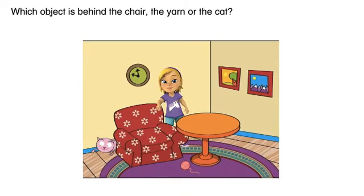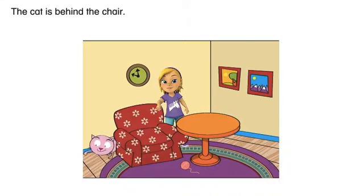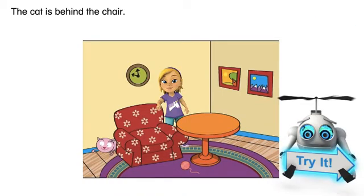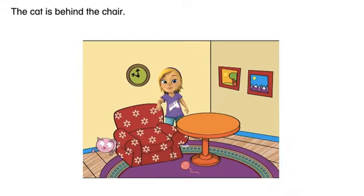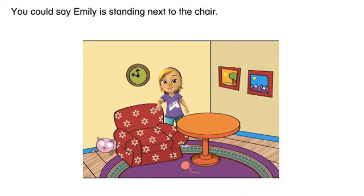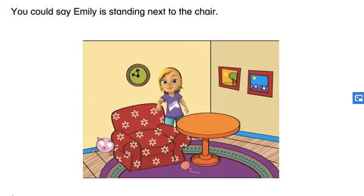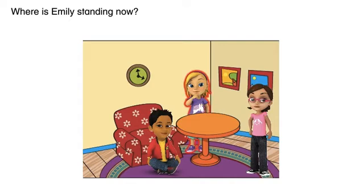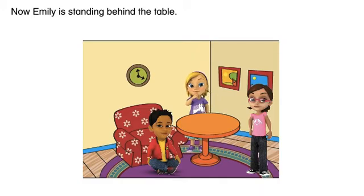Which object is behind the chair — the yarn or the cat? The cat is behind the chair. Where is Emily standing? You could say Emily is standing next to the chair.